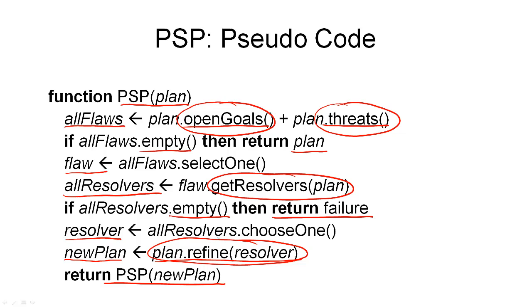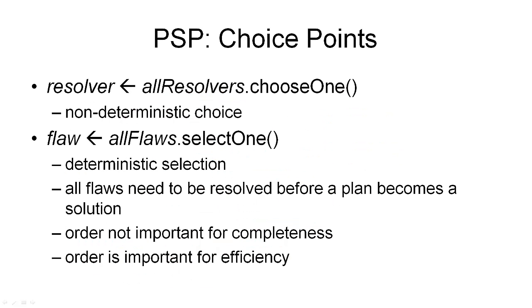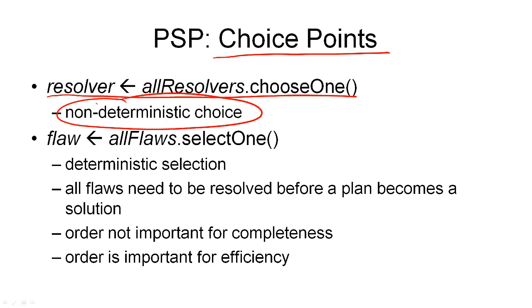But before I get there, there are two more functions that look quite trivial but are actually different. As you can see, I've chosen different names for them. Firstly, we need to select a flaw. And secondly, we need to choose a resolver. There's a good reason why I've chosen two different words for these two different functions. The two functions — choose one and select one — represent choice points in our algorithm. Let me first describe the choice point where we select a resolver. We have a function called resolvers choose one that selects one of the resolvers for our chosen flaw. This is a non-deterministic choice point, meaning we need to turn this into a deterministic algorithm for the implementation. This choice point is one that we need to backtrack over — we need to come back here if we fail in one branch and try a different branch in our search.